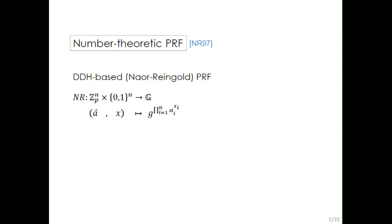The first construction given by Goldreich et al. was very elegant but a bit inefficient. In 1997, Naor and Reingold proposed the first number-theoretic pseudorandom function based on the DDH assumption.